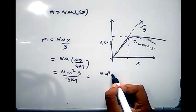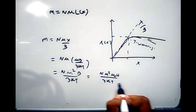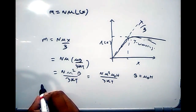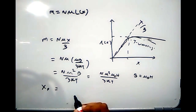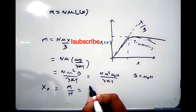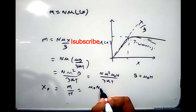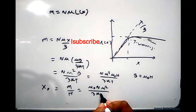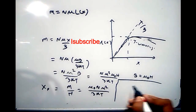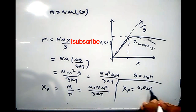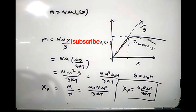Since B = μ₀H, we have M = nμ²μ₀H / 3kT. The magnetic susceptibility χ_m = M/H = μ₀nμ² / 3kT. This is the final expression from Langevin's theory of paramagnetism: χ_m = μ₀nμ² / 3kT.